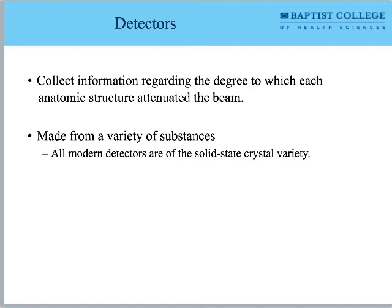Detectors collect information about the degree to which each anatomic structure attenuates the beam — they're capturing the remnant beam, detecting both the original and remaining signal. This is why in nuclear medicine we can use CT for attenuation correction. Detectors are generally made of some kind of solid-state crystal. Back in the good old days they used xenon gas, but pretty much no one uses that anymore — almost everything now is solid-state crystal.